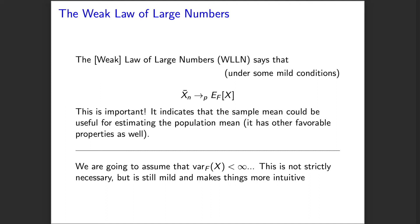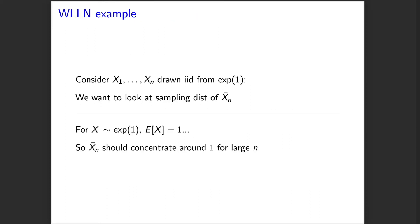In our proof, we are going to assume that each observation has bounded variance, which isn't strictly necessary but is a mild assumption that makes the proof and calculations much more intuitive. Let's look at a graphic example of the weak law of large numbers in action before we engage with proving the result.